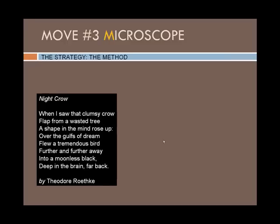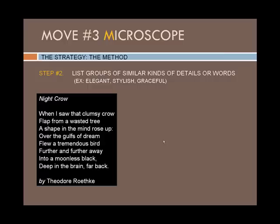Next, make another list, but this time look for groups of similar kinds of details or words. For example, the words 'elegant,' 'stylish,' and 'graceful' are not exactly the same but they have similar meaning and connotation. Let's take a look at some possible groupings we came up with.